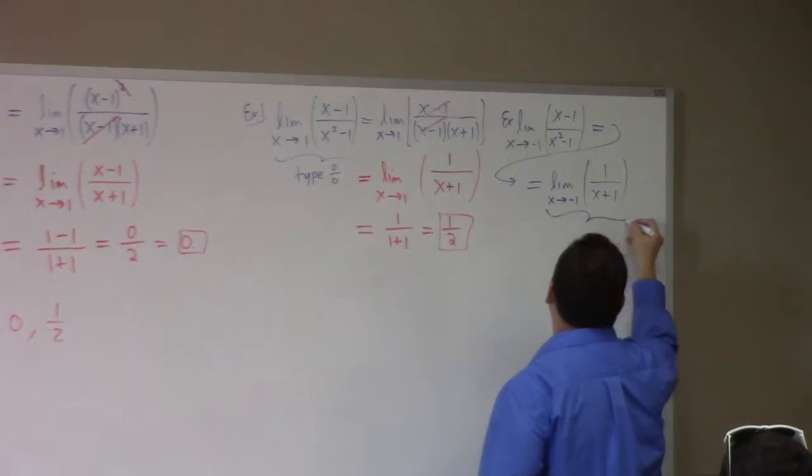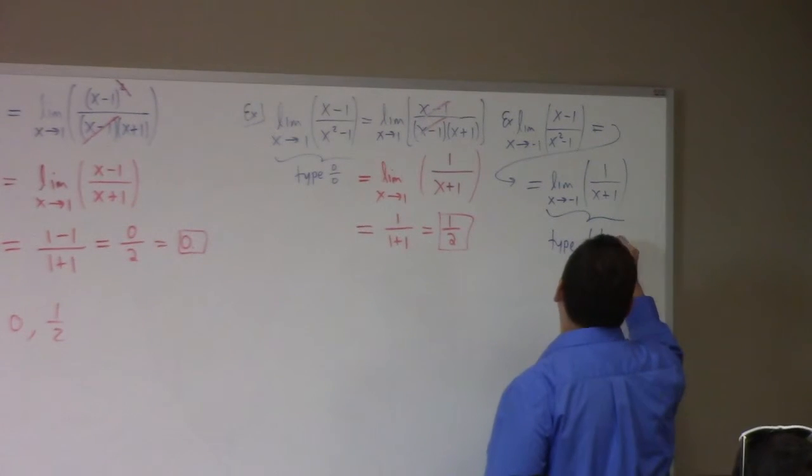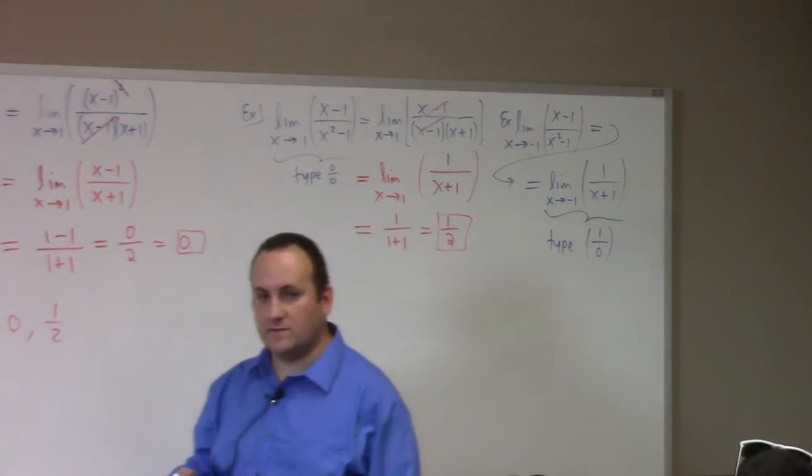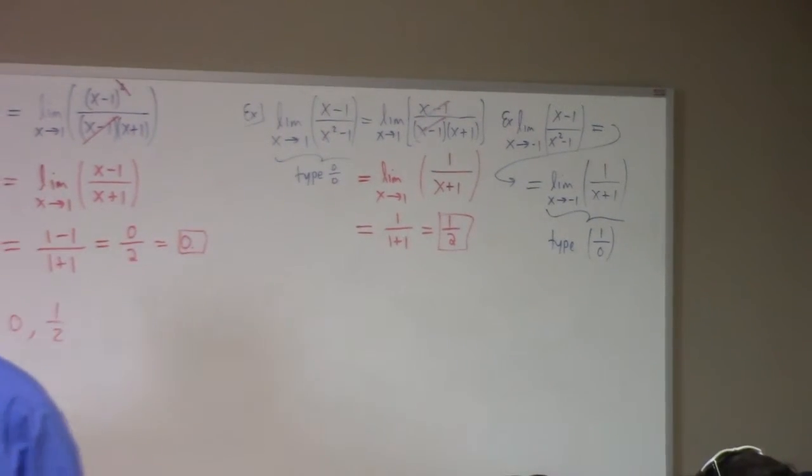Now type one over zero. This terminology may not be in your book but I think it's worth knowing. It helps me to communicate with calculus students. If I see a limit of type one over zero that's not indeterminate. Game over. Do not pass go. That is either plus or minus infinity or does not exist. That is divergent.